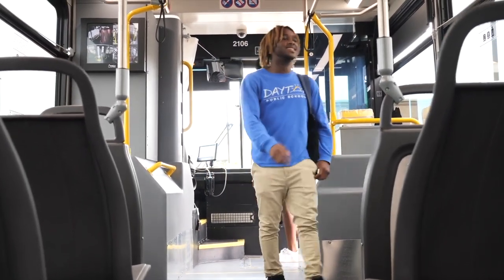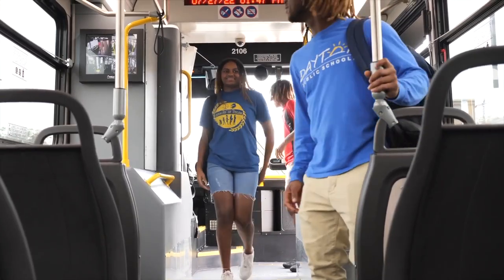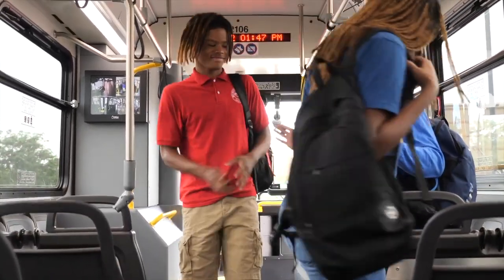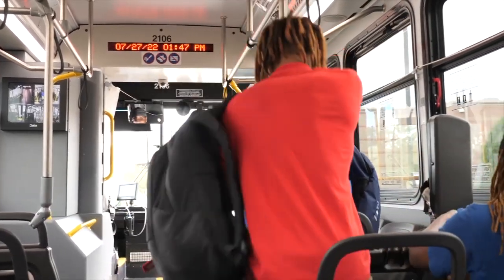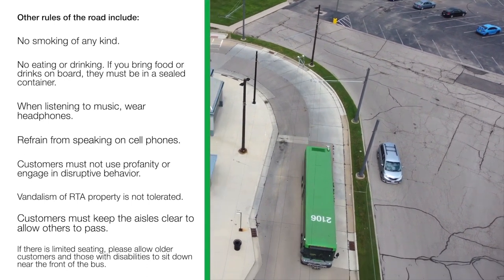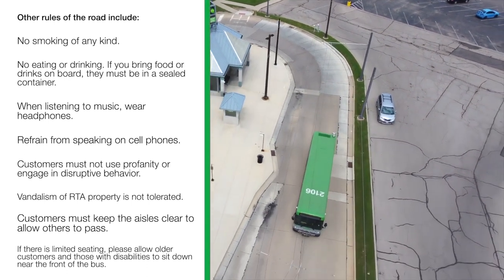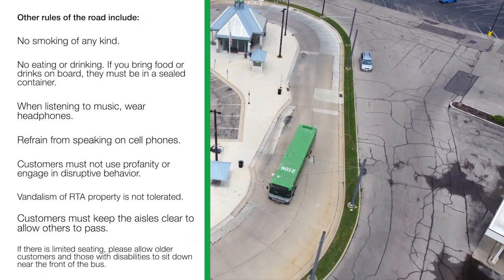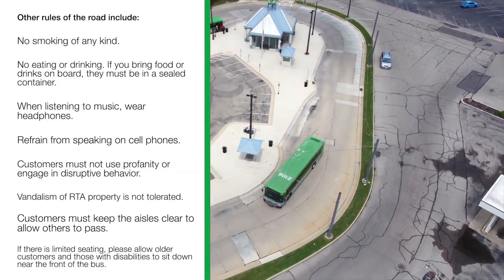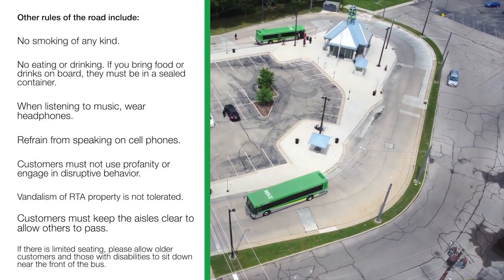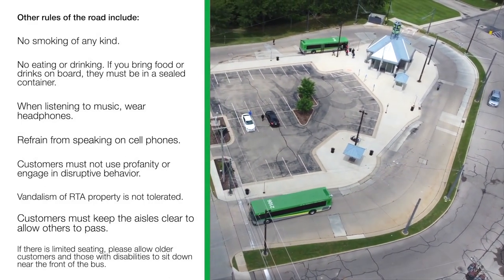Riding the bus. Please take a seat or stand and hold onto a handrail or safety strap while the bus is moving. If you're standing, please be sure to stay behind the yellow line at the front of the bus for your safety. Other rules of the road include no smoking of any kind, no eating or drinking. If you bring food or drinks on board, they must be in a sealed container. While listening to music, wear headphones. Refrain from speaking on cell phones.